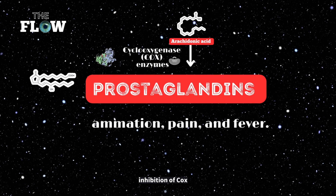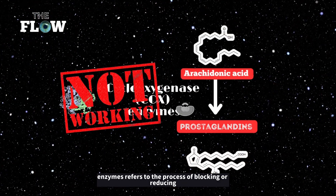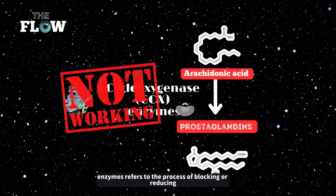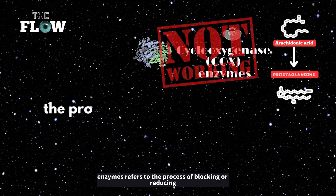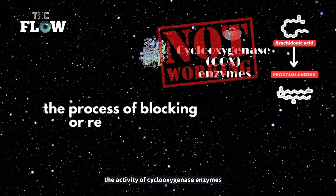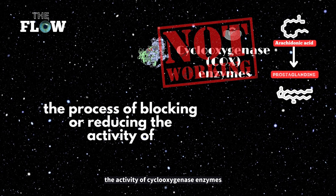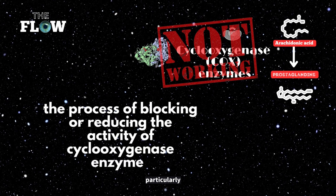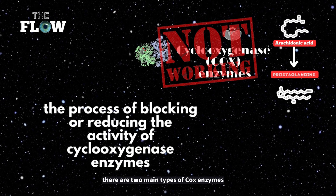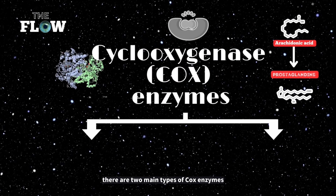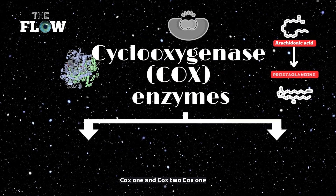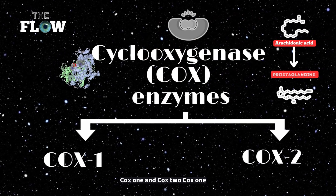Inhibition of COX enzymes refers to the process of blocking or reducing the activity of cyclooxygenase enzymes. There are two main types of COX enzymes: COX-1 and COX-2.